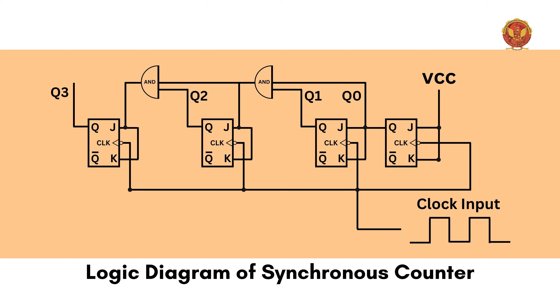In a synchronous counter example using JK flip-flops, for a 4-bit counter we need 4 flip-flops. The circuit is a little complex — apart from the flip-flops, we also use certain logic gates to design it. However, the clock is common to all the flip-flops. Since all flip-flops are changing their state at the same time, it is called a synchronous counter. Asynchronous counter design is simple, while in synchronous counter we need to determine how to connect the logic gates, how many gates are required, and what combination of circuits need to be designed.